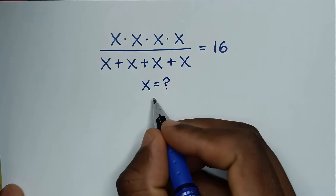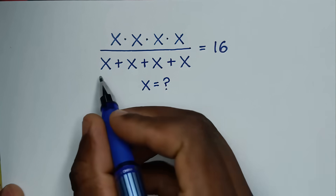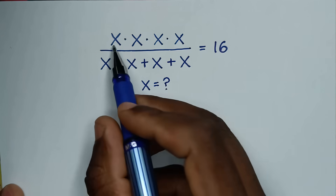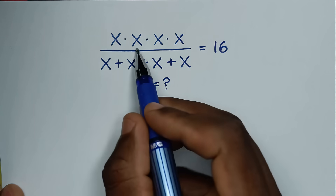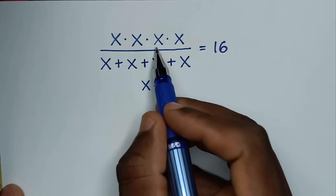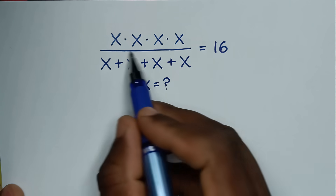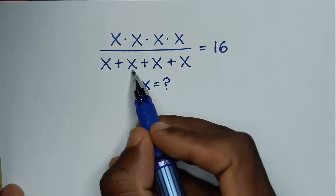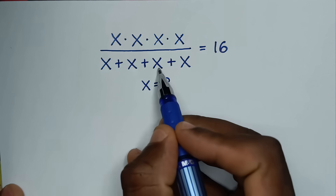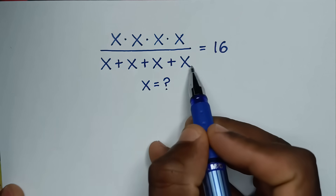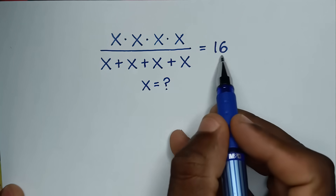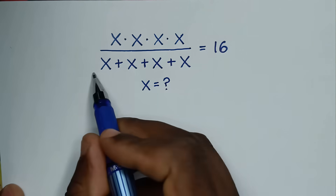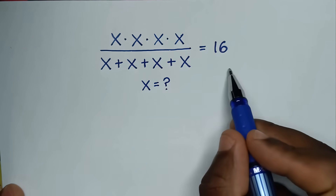Hello, you are welcome to solve this math problem, which is x times x times x times x over x plus x plus x plus x is equal to 16. To find the values of x from this equation.